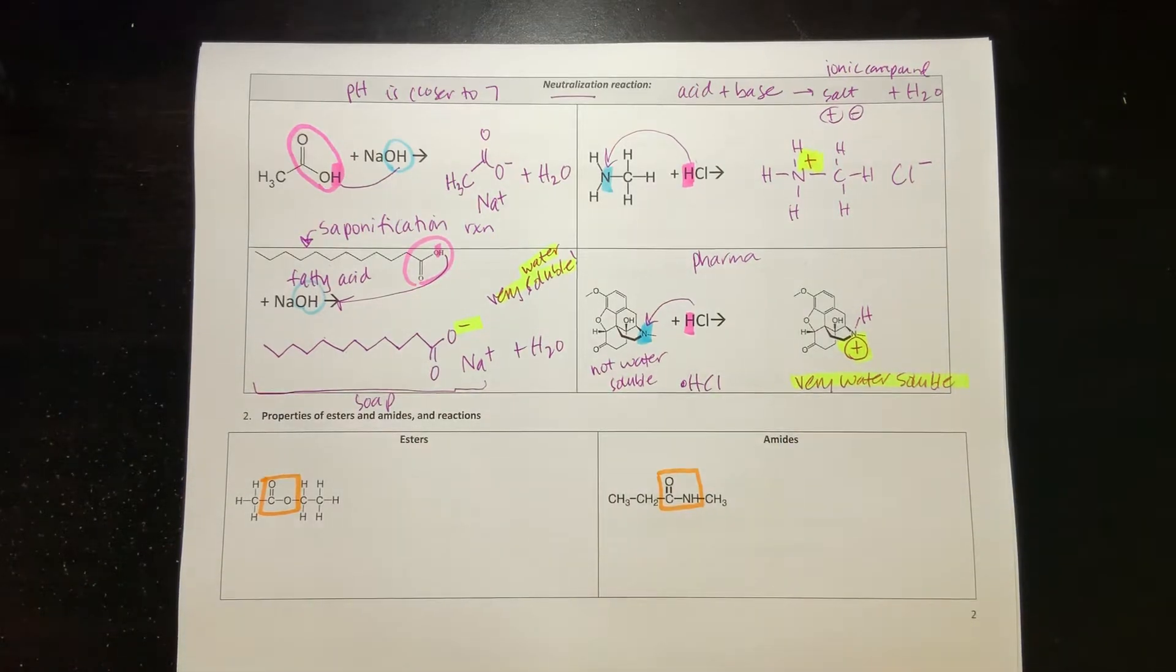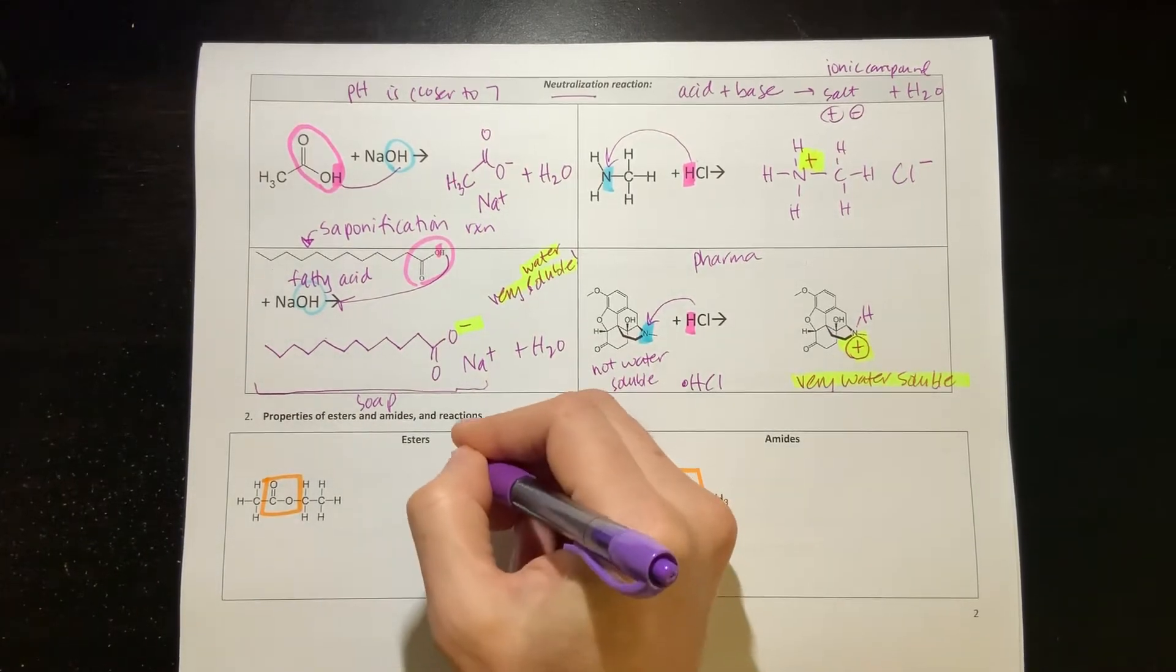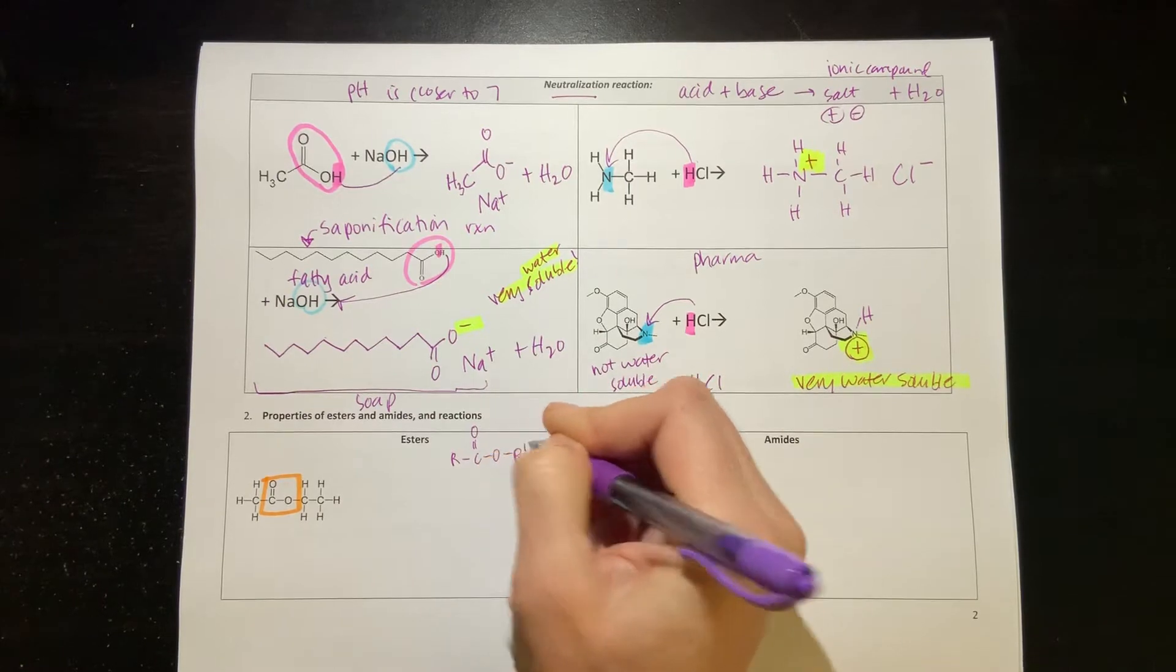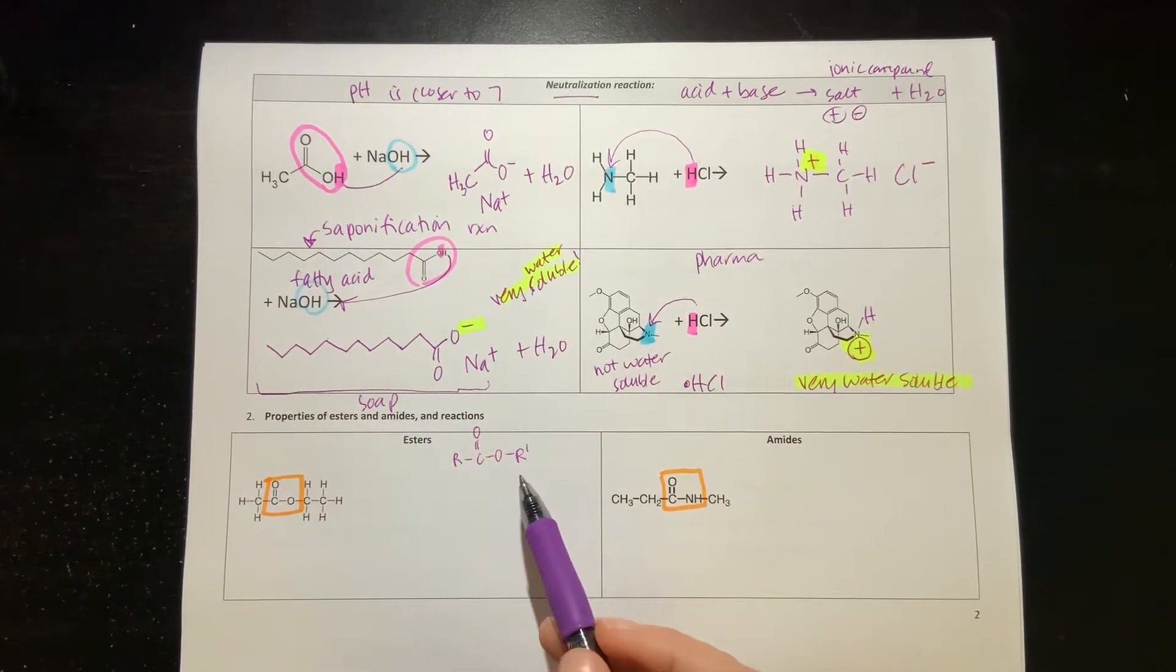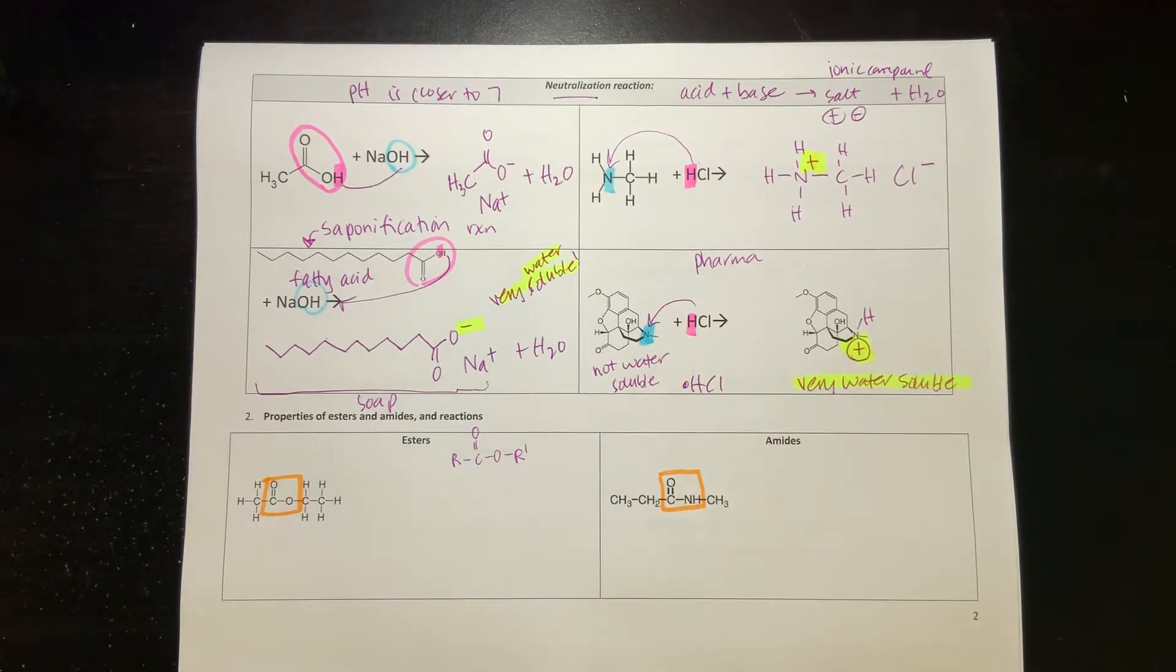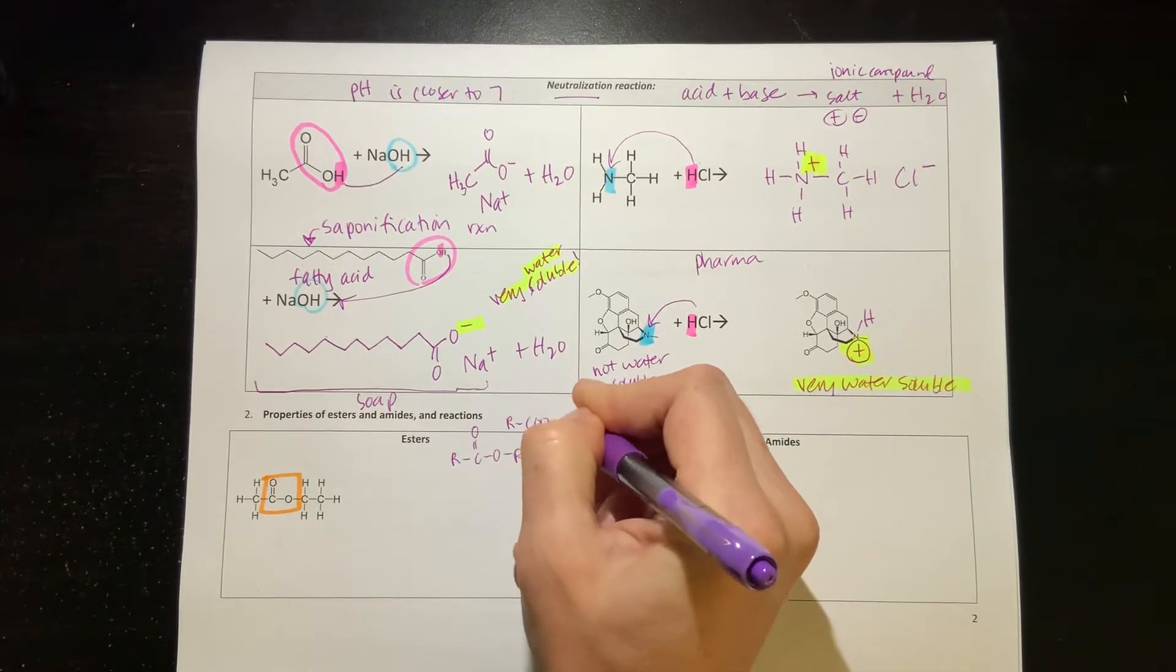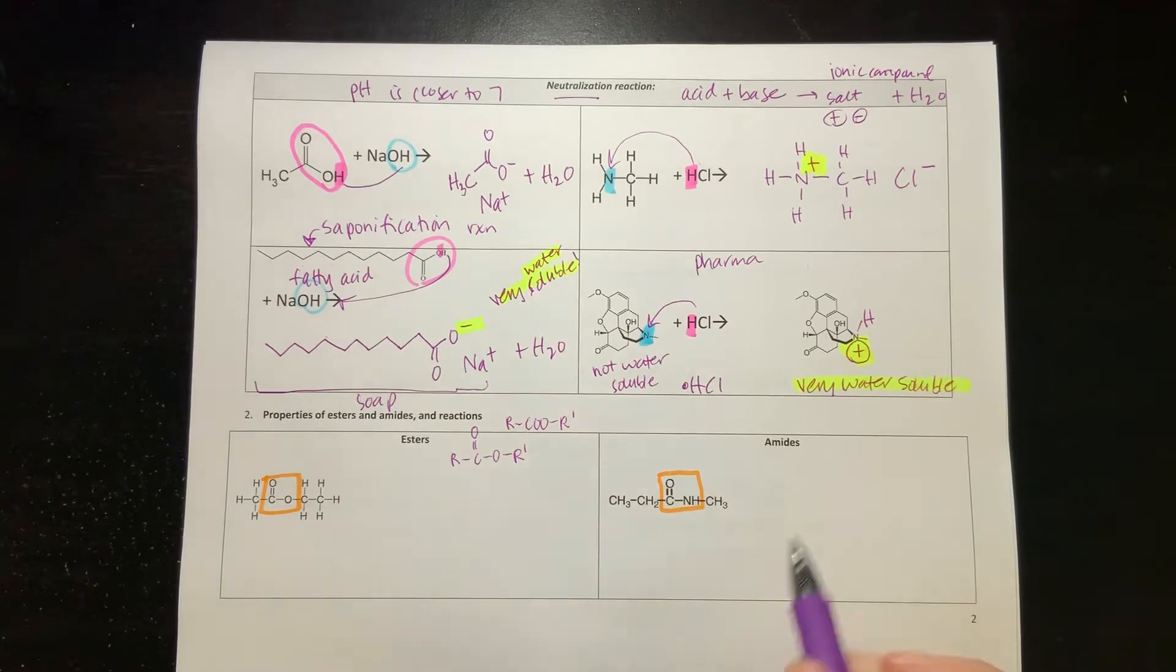Don't ever classify these as ketones or amines. You want to classify them as the biggest thing possible that you can see. For an ester, the way that I would write this generically would be R carbonyl O and then R prime, meaning it could be something else on the other side. Another way that you might see this, especially in your textbook, is R-COO-R prime.